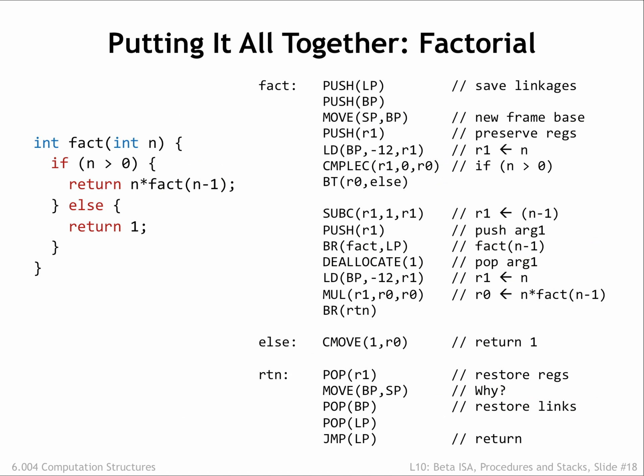Here's the code our compiler would generate for the C implementation of factorial, shown on the left. The entry sequence saves the caller's LP and BP, then initializes BP for the current stack frame. The value of R1 is saved so we can use R1 in the code that follows. The exit sequence restores all the saved values, including that for R1. The code for the body of the procedure has arranged for R0 to contain the return value by the time execution reaches the exit sequence.